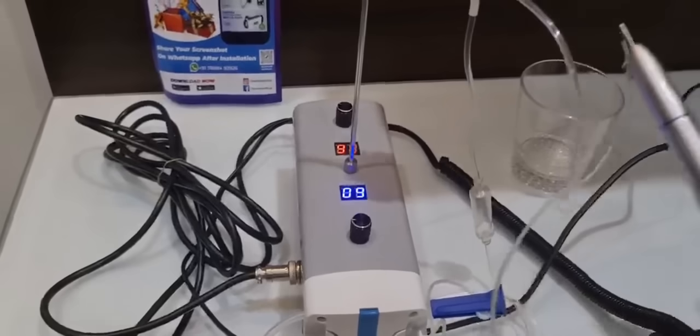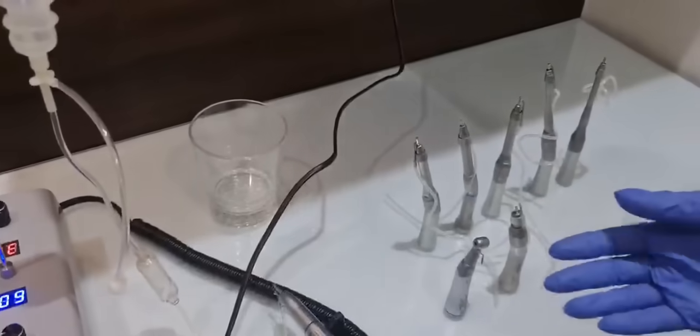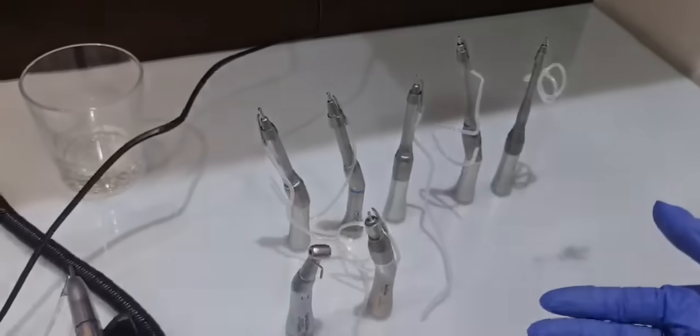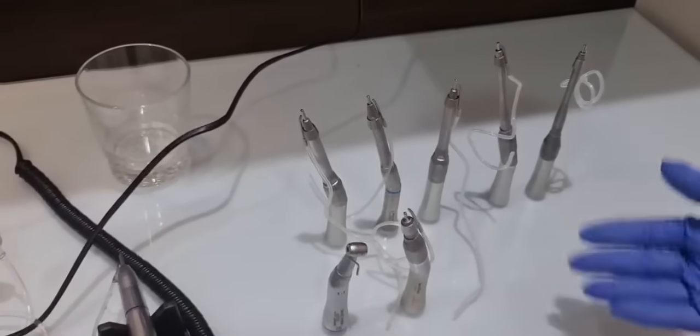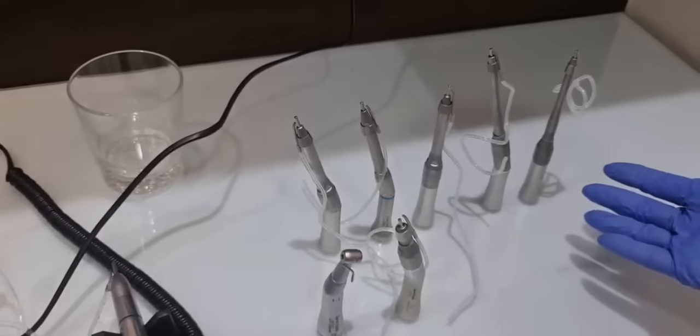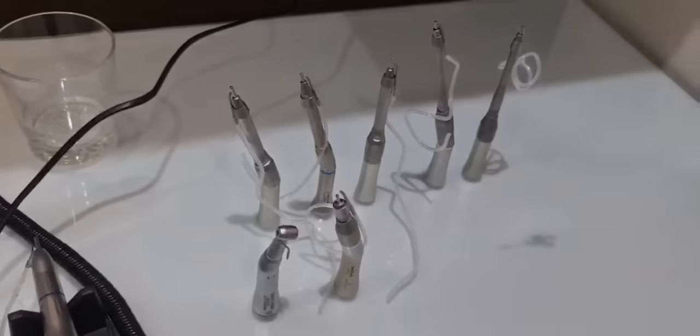The handpieces which can be used with this surgical brushless E-type motor include contra-angle one-to-one, straight angulated, and straight ones, as well as the ones which are used for ENT surgeries. These handpieces can also be attached with this motor.